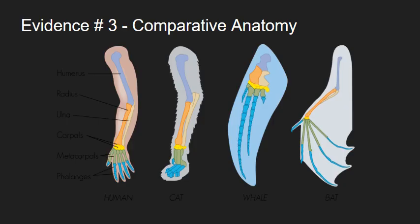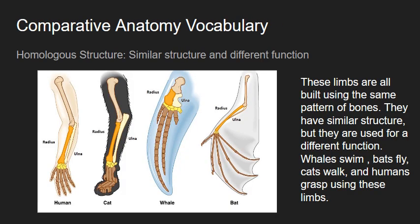Moving on to the third evidence, which is comparative anatomy. We're going to view some of the parts or similar structures that are called homologous, such as limbs or pattern of bones, that have a similar structure but are used for different functions.